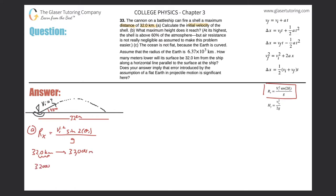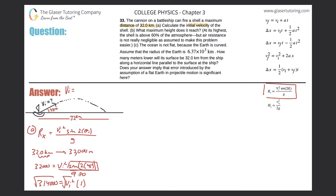So 32,000 meters equals the initial velocity squared times sine of two times 45, all over 9.80. Cross-multiplying: 9.8 times 32,000 gives 314,000, which equals the initial velocity squared multiplied by sine of 90. Sine of 90 is 1, so we take the square root of 314,000, giving an initial velocity of 560 meters per second.